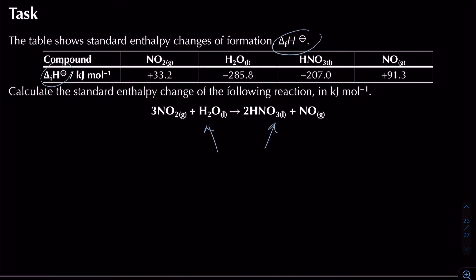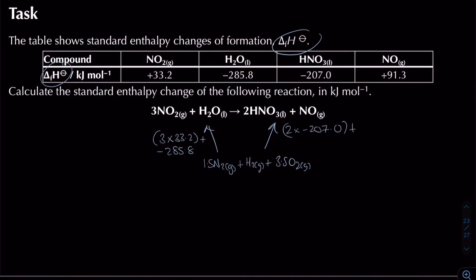Starting the calculation: NO₂ has ΔHf = plus 33.2, and we have 3 moles of that; water has ΔHf = minus 285.8, with 1 mole; nitric acid (products) has ΔHf = minus 207.0, with 2 moles; and there's an additional value of 91.3. Setting up the equation starting from zero, going against one arrow means subtracting, going along the other means adding.